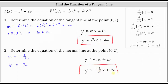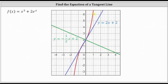Let's verify these results graphically. In this graph, f of x is the red function. The point zero comma two is the point on the function where we found the tangent and normal line equations. The blue line is tangent to the red curve at zero comma two — the equation of the tangent line is y equals two x plus two. The green line is perpendicular to the tangent line at zero comma two — the equation of the normal line is y equals negative one half x plus two. The graph verifies our work is correct.